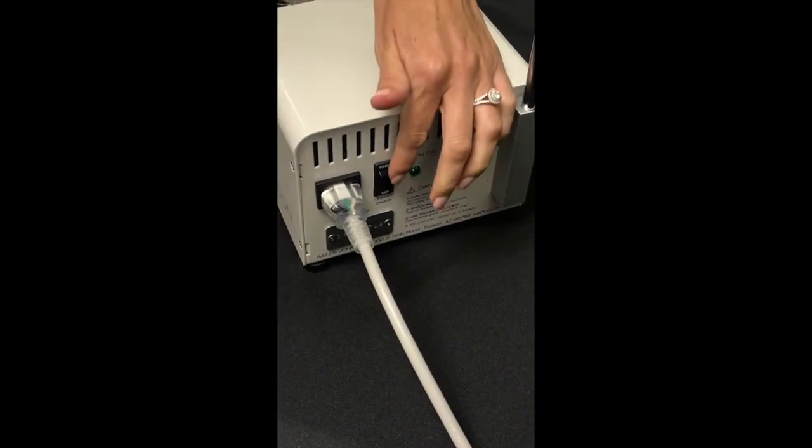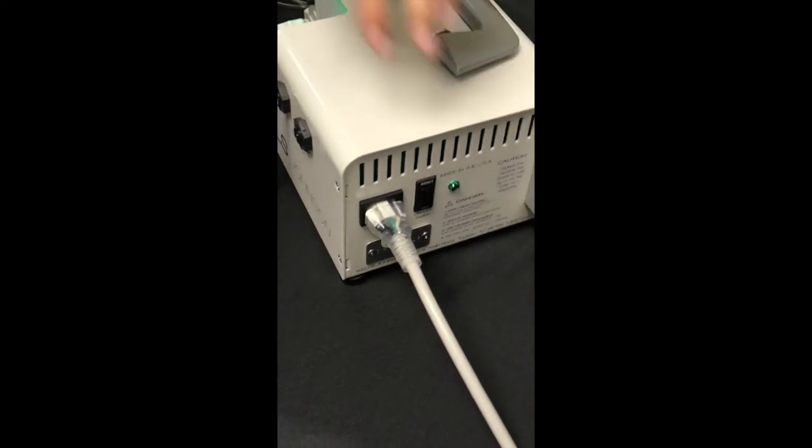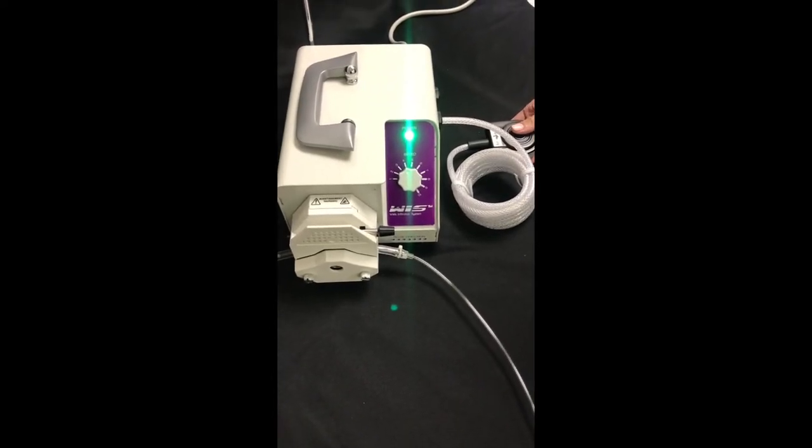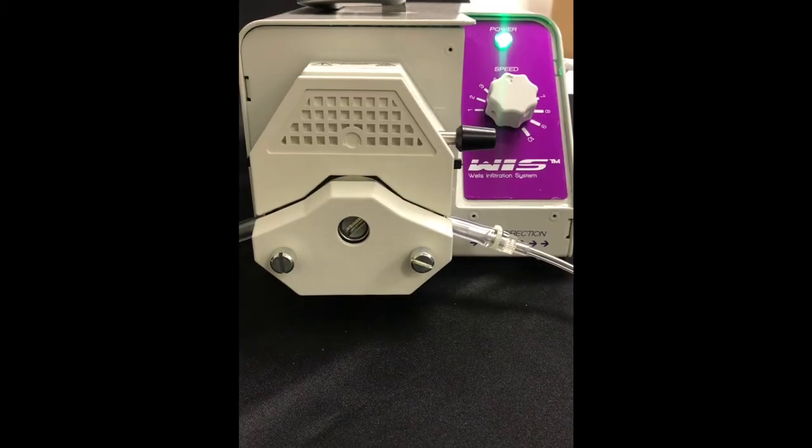Located on the back of the infusion pump, you will find the power on button. Using the pneumatic foot switch, you are now ready to infiltrate using your Wells Johnson infusion pump.